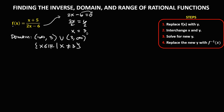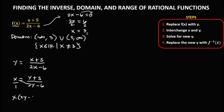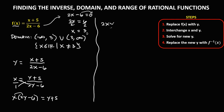To find the inverse, replace f of x with y: y equals x plus 5 over 2x minus 6. Then interchange x and y, so x equals y plus 5 over 2y minus 6. Cross multiply: x times 2y minus 6 equals y plus 5. Simplify by distributing: 2xy minus 6x equals y plus 5. Factor out y, placing all y terms on the left side.